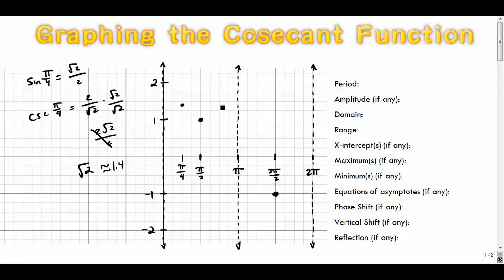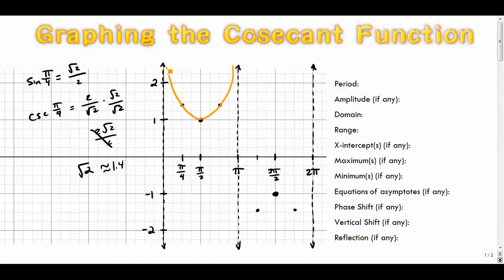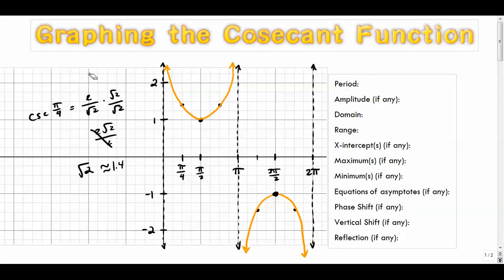The graph is going to be very symmetrical. At 3π/4 we get the same value, and similarly on the other side we go down to about negative 1.4. The graph approaches those asymptotes infinitely closely but never touches them, coming down to the minimum value at π/2 comma one. Over here it goes in the other direction. There you go — that is the cosecant function.